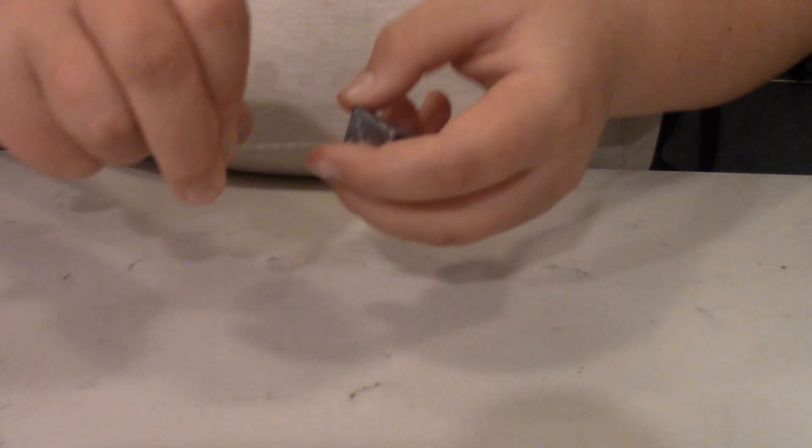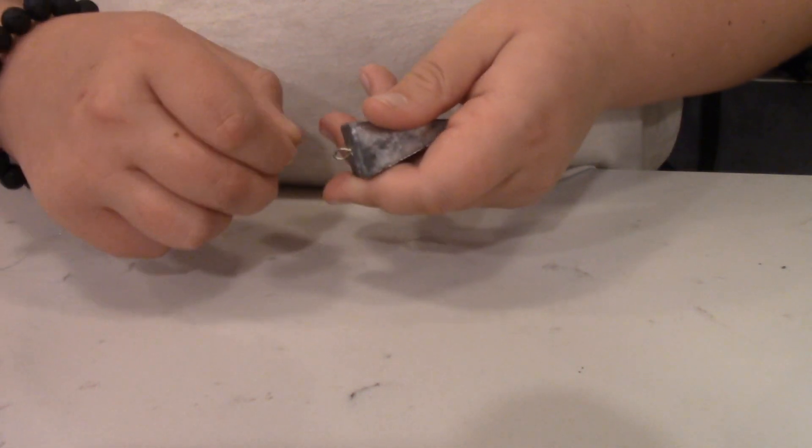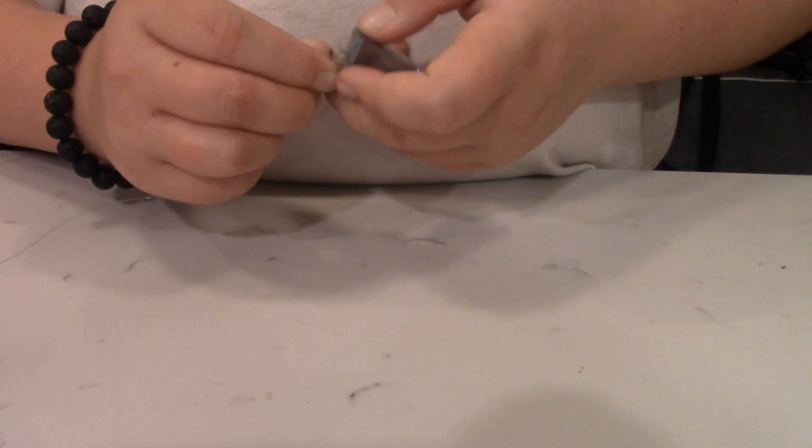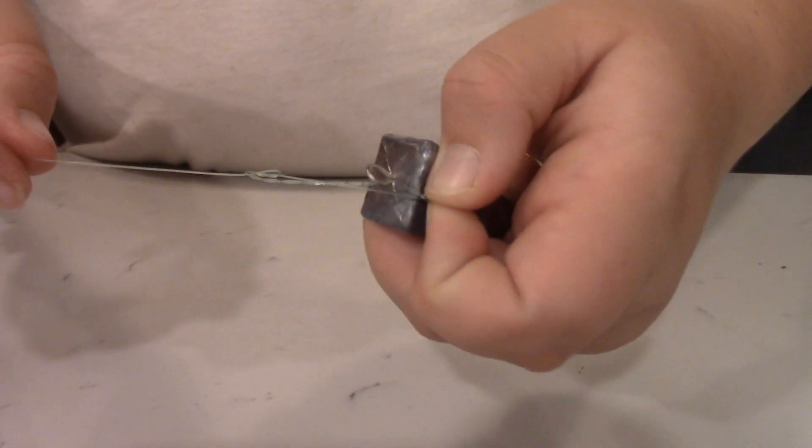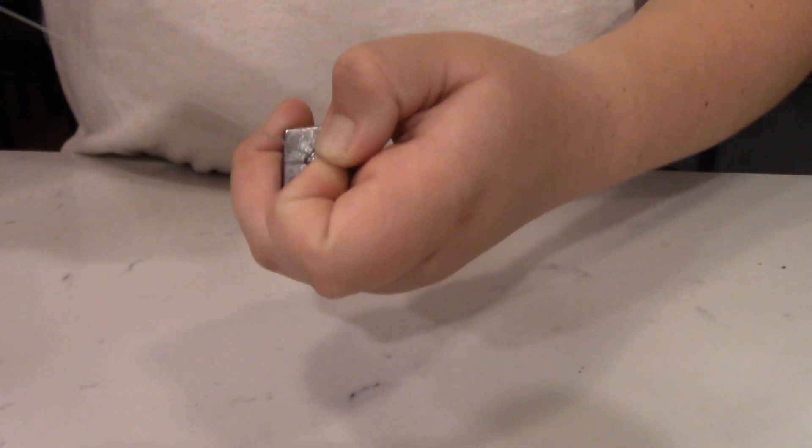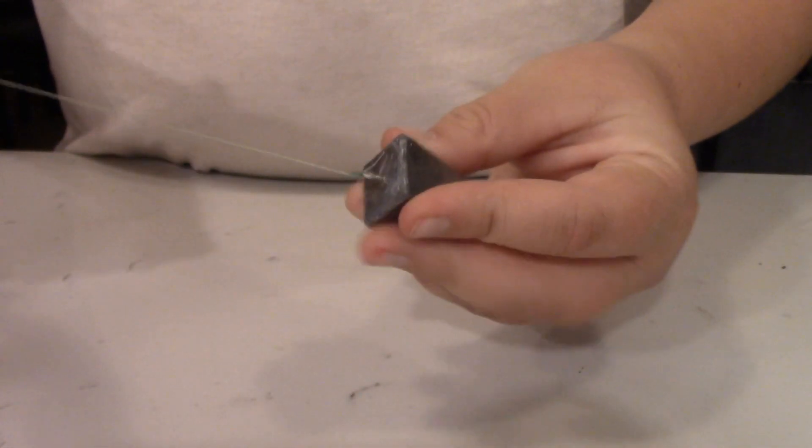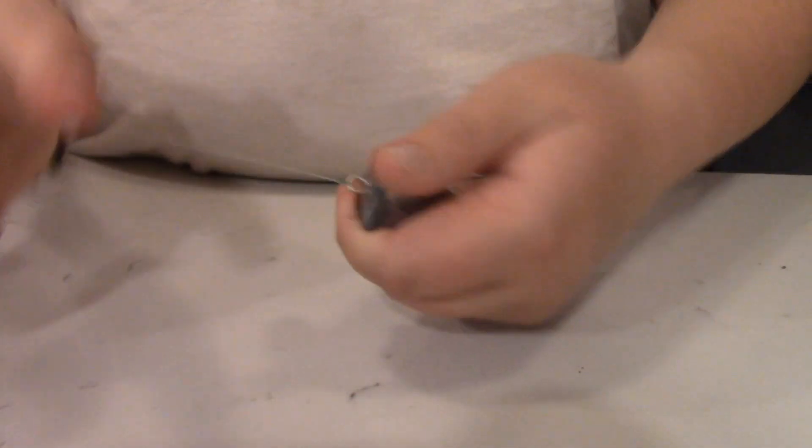Then you are going to wet your line, put your tag end through the loop at the bottom, and pull tight. That's how you tie an 8 knot or a 9 knot.